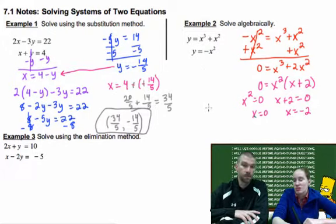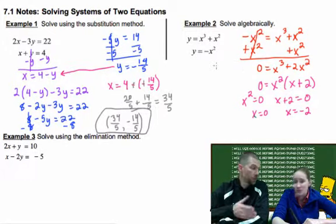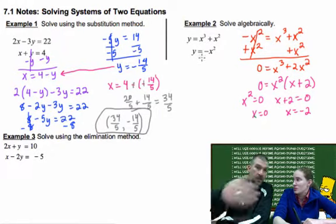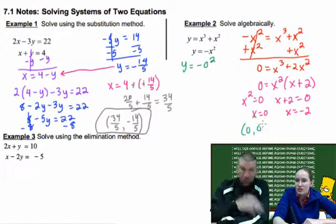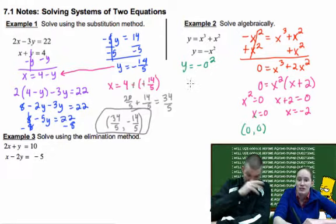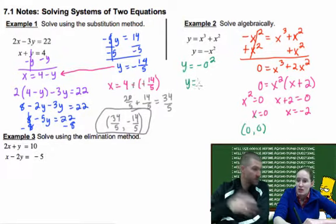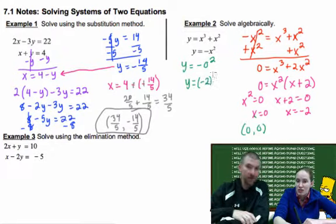So we need to go ahead and plug in these to find the Y values that go with them. So I would pick the second one. Definitely pick the second one because there's only one thing there to do. So when I plug in 0, I get 0. So one of our answers is 0 comma 0. Excuse me. I had to sneeze. It's this wind today. It's blowing my allergies crazy.